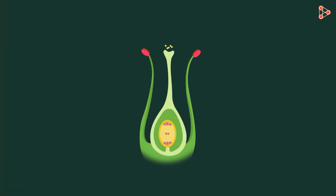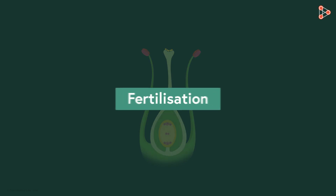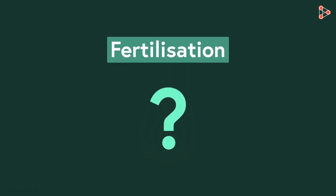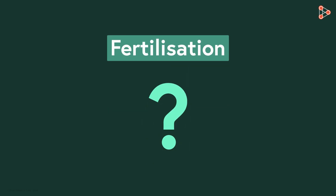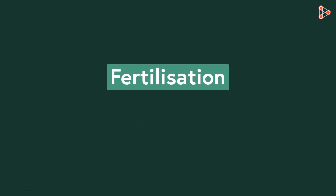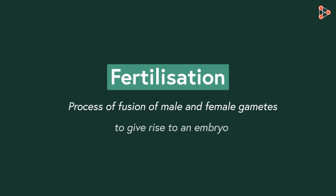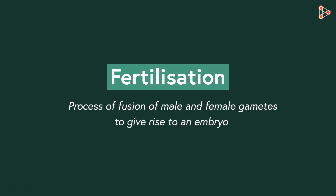Now let us see what exactly happens after pollination. The next and the most important step is that of fertilization. What is this process exactly? Fertilization is simply the process of fusion of the male and female gametes to give rise to a new embryo.